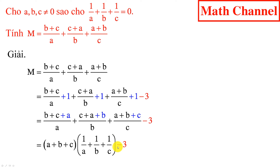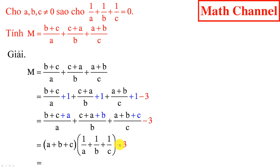Do giả thiết 1 phần A cộng 1 phần B cộng 1 phần C bằng 0, cho nên chúng ta có tích này bằng 0. Khi đó ta có M có giá trị là 0 trừ 3, tức là bằng âm 3.